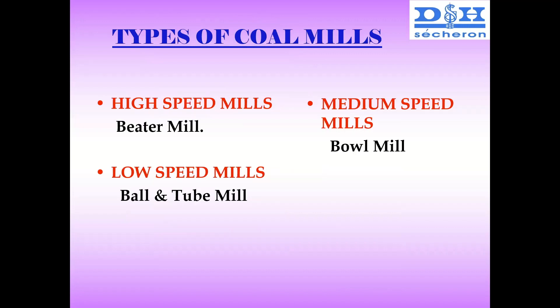In high-speed mills, there is a beater mill, but the capacity of the mill is very less, making it difficult. Low-speed mills are ball-and-tube mills, but the size of the equipment is very large. That is the reason medium-speed ball mills are mostly preferred and in use today.